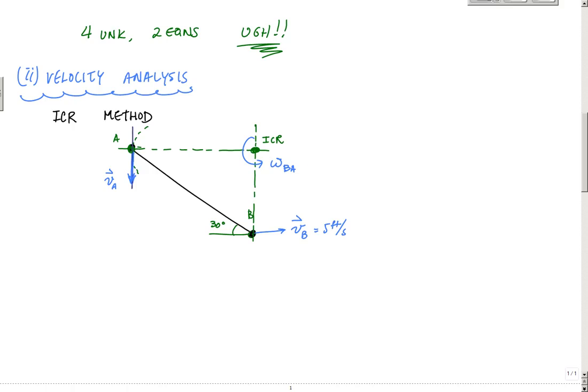And the relationship here for instantaneous center of rotation is that this omega BA is VB divided by the distance to B from the instantaneous center of rotation, which is also equal to any other point, the velocity at any other point divided by the distance to any other point from the instantaneous center of rotation at that instance. So right here, we're going to get, once we figure out what this distance is right here, we're done, right? We're going to get that angular velocity.